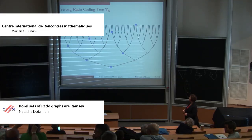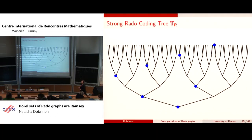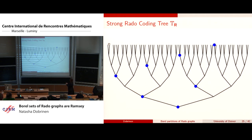To summarize the construction: starting from the root, every time you get to a node you've already put in, you split and take successors, then go through taking more successors. If you squish down the blue nodes, you get the 2^{<ω} levels. You can place coding nodes anywhere as long as they're dense, and the same process will work.